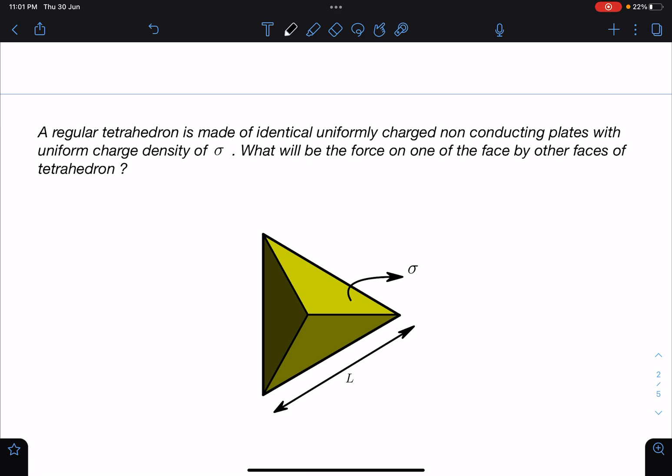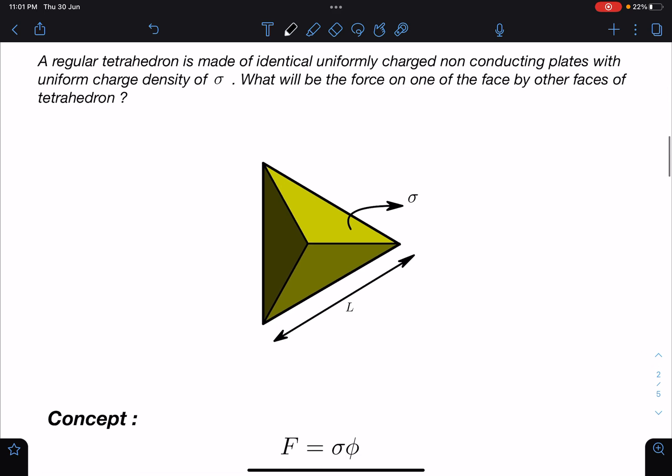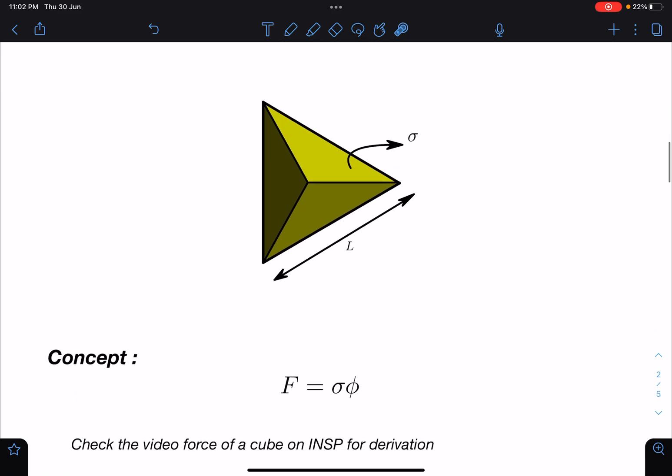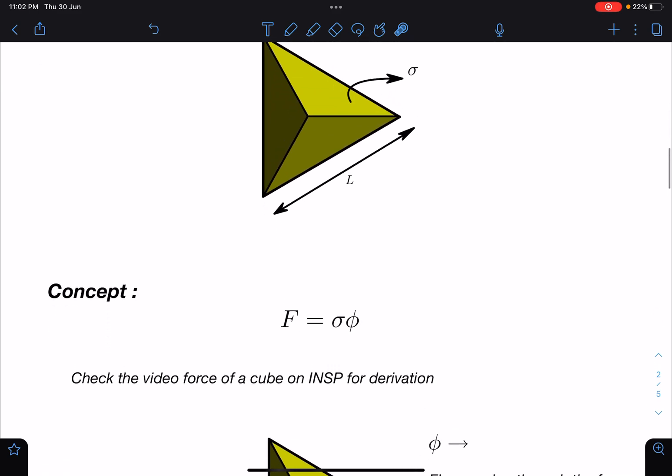So the logic here is we have to find first of all the force on one surface due to remaining 3. What we are going to do is use F equals sigma phi. You need to check the video of force of a cube on INSP, already I have derived this result and when exactly we can apply. So whenever force is perpendicular to the surface, we are going to use this logic.